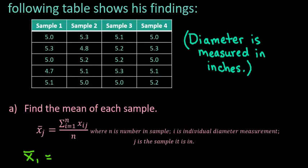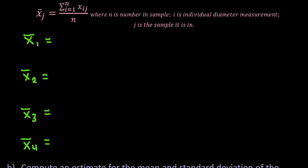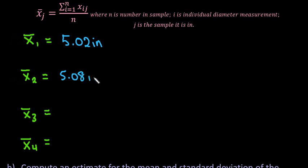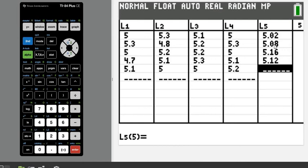I do have a video showing all of the hand calculations, and I will put a link to that if you need to show your work. So the sample means are: 5.02 inches, 5.08 inches, 5.16 inches, and 5.12 inches — all obtained directly from the calculator. I put them into a list because it makes the next part easier.